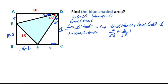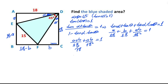Substituting into the equation: a over 18 plus b over 18 plus a times b over 18 squared equals 1. Organizing: (a + b)/18 plus ab/18² equals 1. Multiplying through by 18 squared: 18a plus 18b plus ab equals 18 squared. This is our first equation.